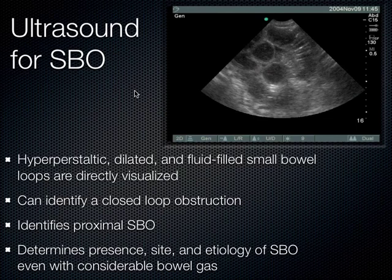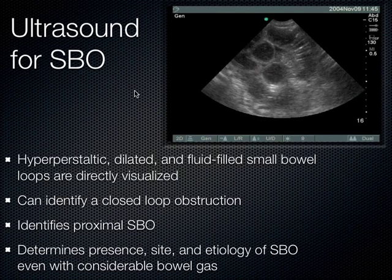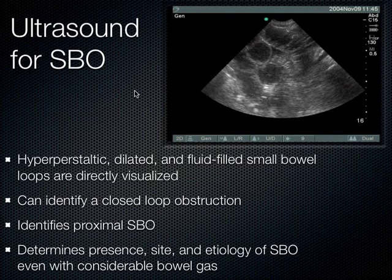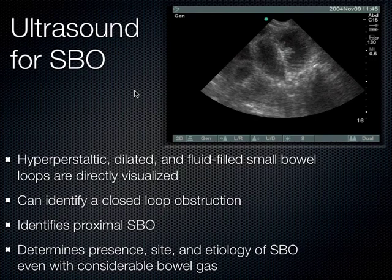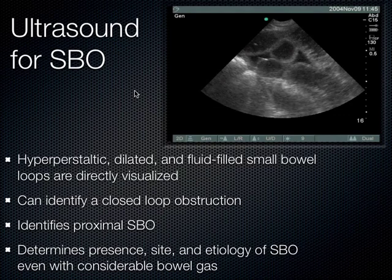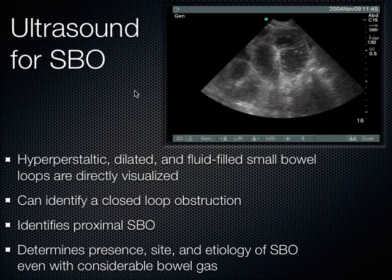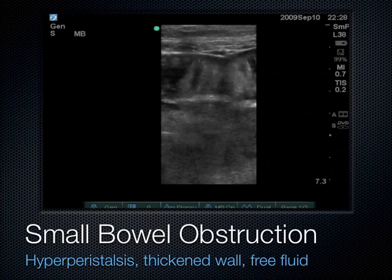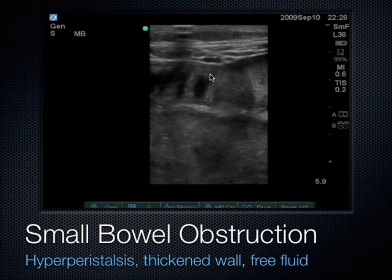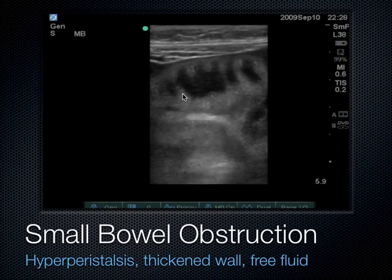Sharp angles of free fluid wedging between loops of bowel suggests the patient probably has a perforation — a surgical emergency. Here's another example of small bowel obstruction: we can see the plique circularis going across a pretty dilated loop of small bowel, and there's also fluid between these two different loops next to one another — fluid surrounding them, which tells us there's probably been perforation.